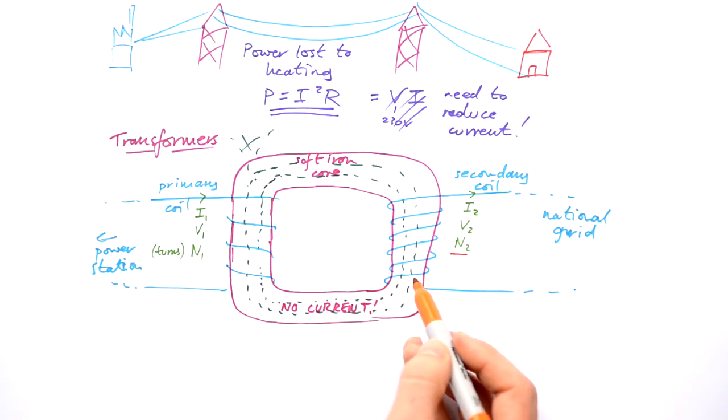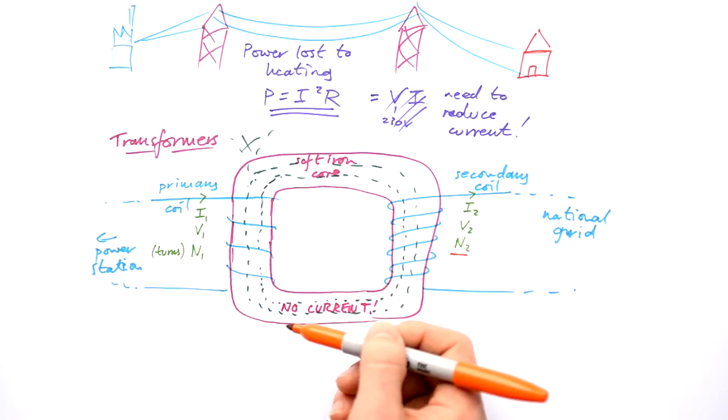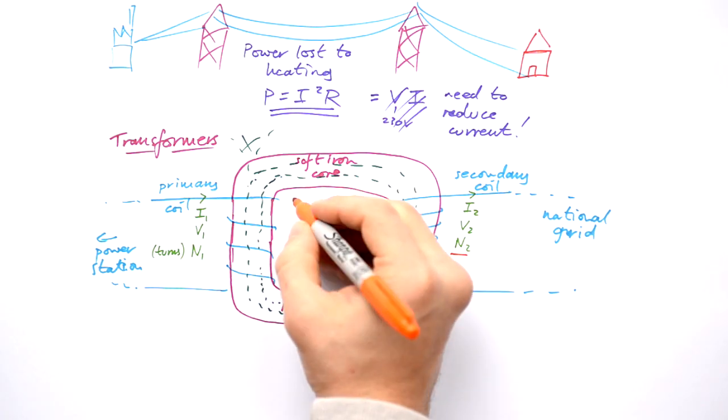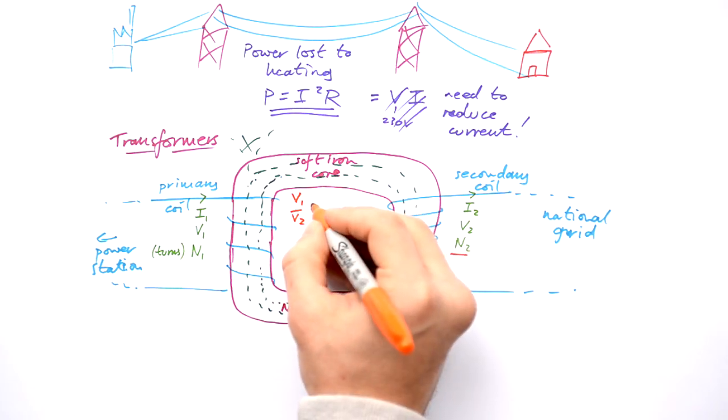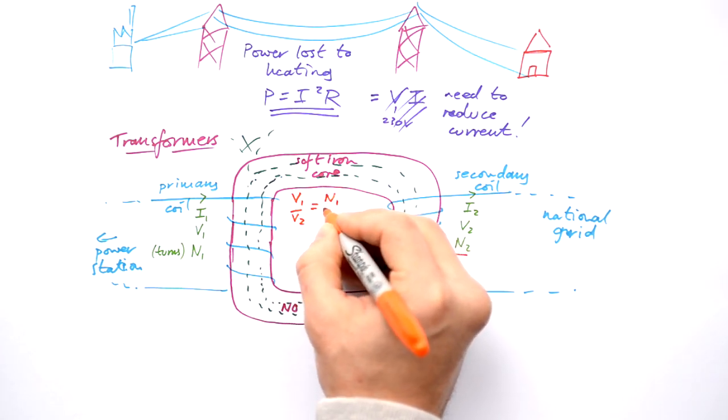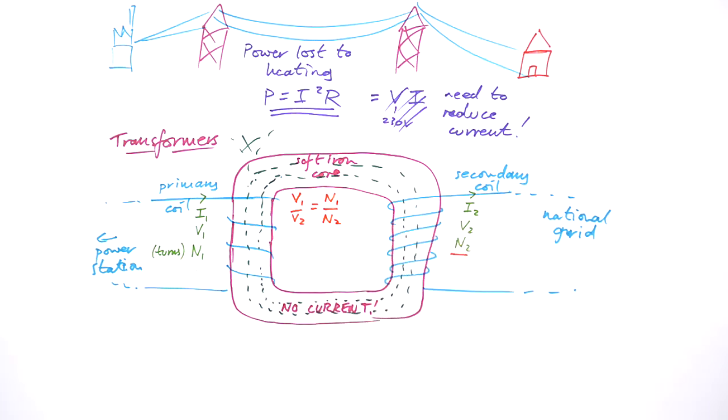So the number of turns on a coil is directly proportional to the voltage of the EMF induced in it. So we can say that the ratios of the voltages equals the ratio of the number of turns.